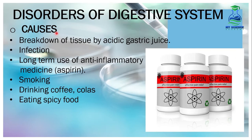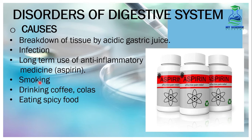What are the causes of ulcer? Number 1, breakdown of tissue by acidic gastric juice — in the stomach, acidic gastric juice functions to digest food and kill microbes, but when it breaks down the stomach lining or tissues, ulcer forms there. Number 2, infection. Number 3, long-term use of anti-inflammatory medicine like aspirin. Number 4, smoking. Number 5, drinking coffee and colas. Number 6, eating spicy food excessively.